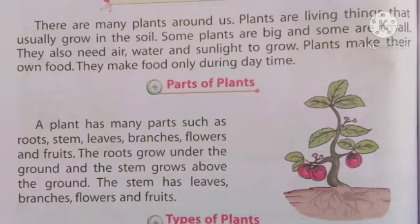अब आइए plants के parts के बारे में जानते हैं। Plants have many parts such as root, stem, leaves, branches, flowers and fruits. एक पौधे के बहुत सारे भाग होते हैं - roots (जड़), stem (तना), leaves (पत्तियाँ), branches (शाखाएँ), flower (फूल) and fruits (फल)। सबसे पहले roots आते हैं, फिर stem, फिर leaves, फिर branches, उसके बाद flower आते हैं और उसी flower से fruits बनते हैं।